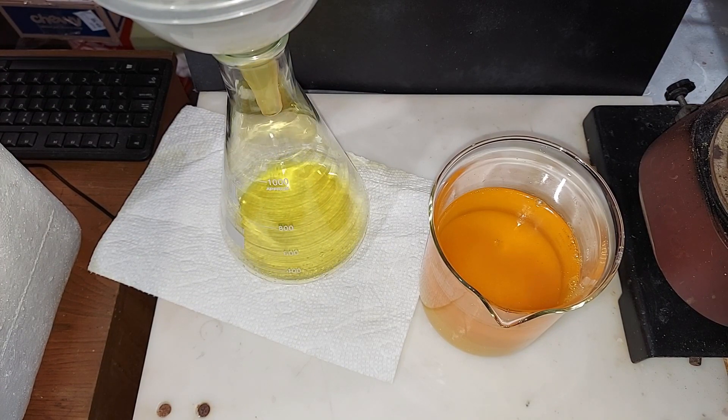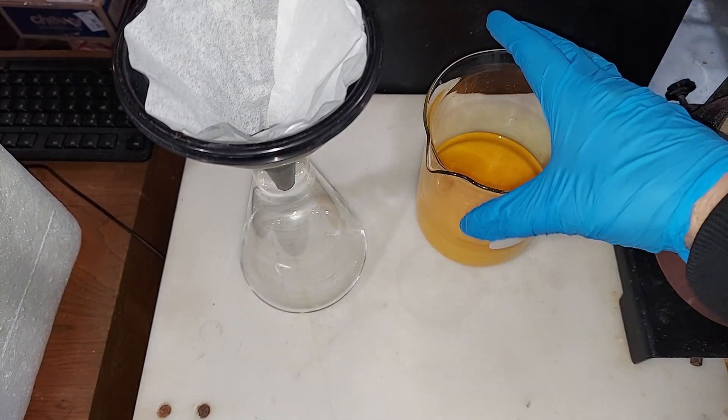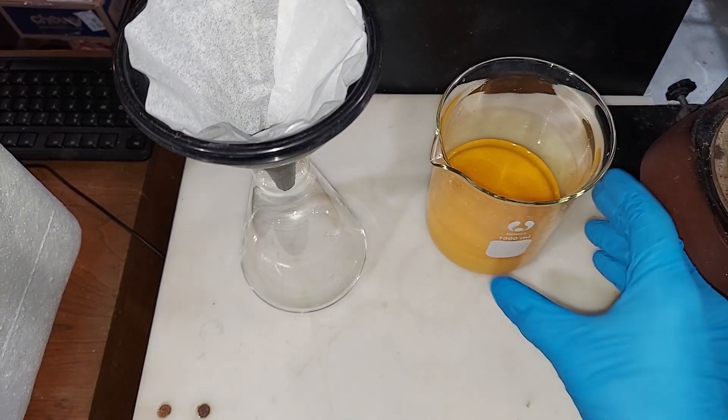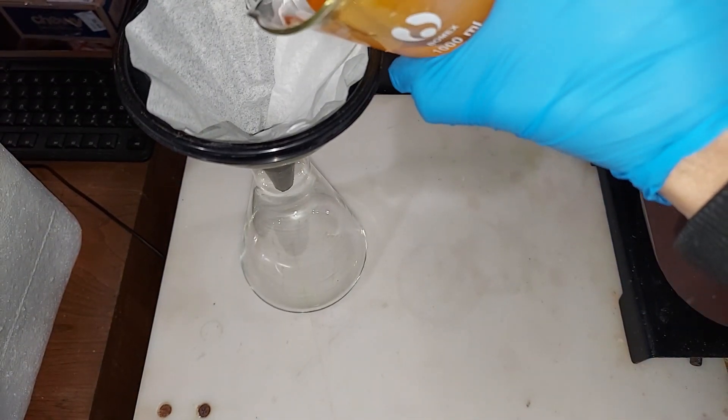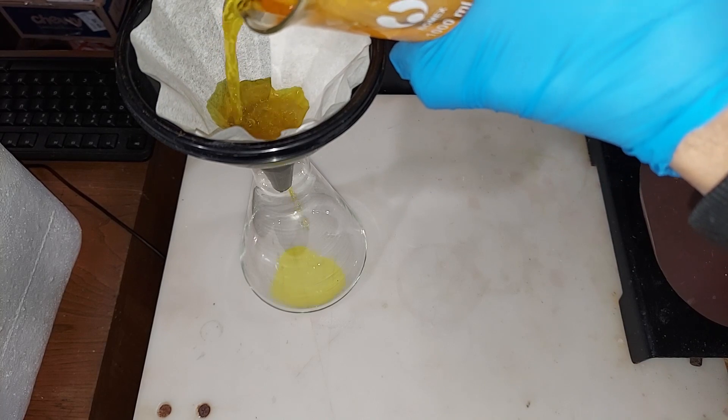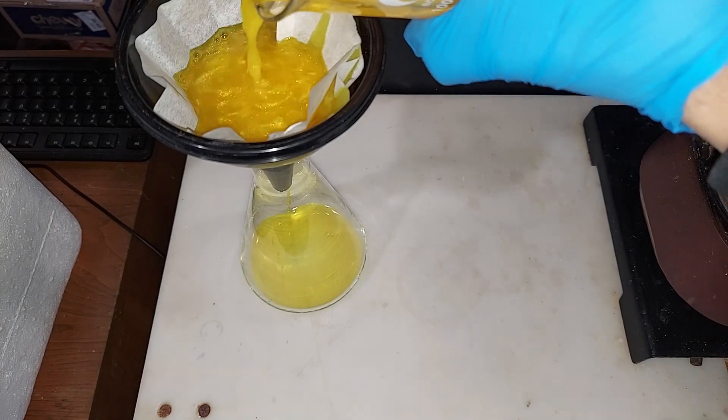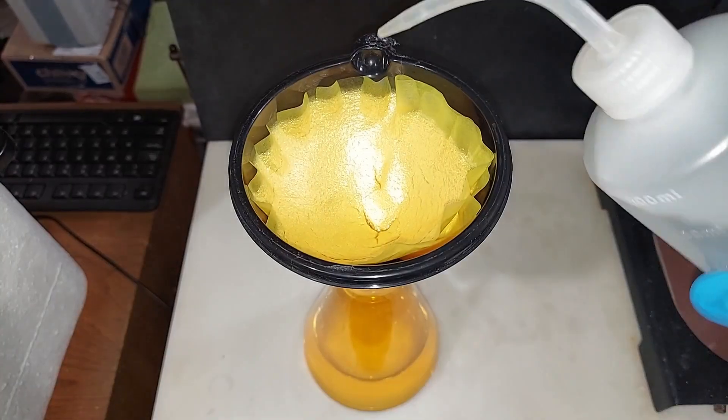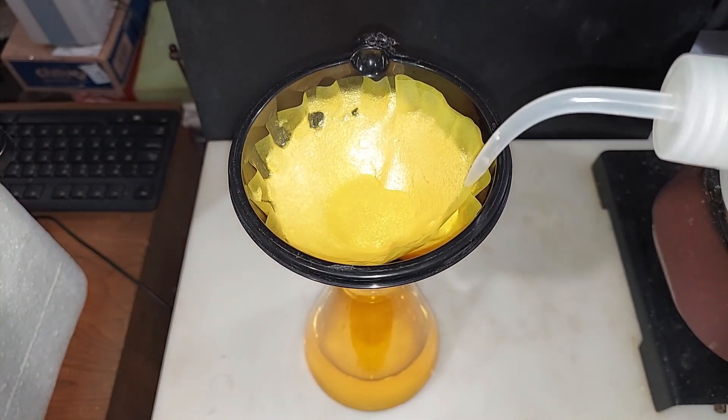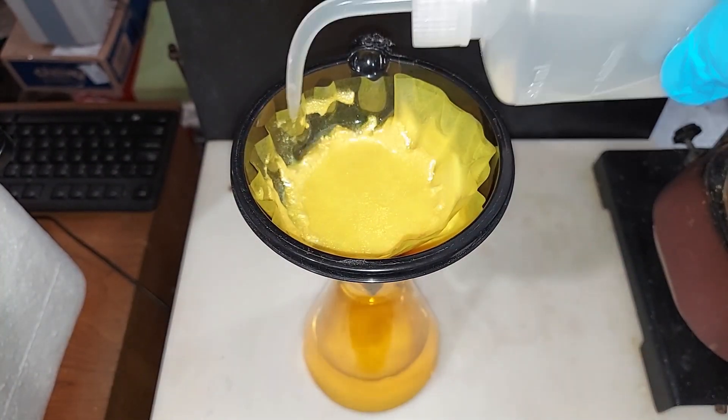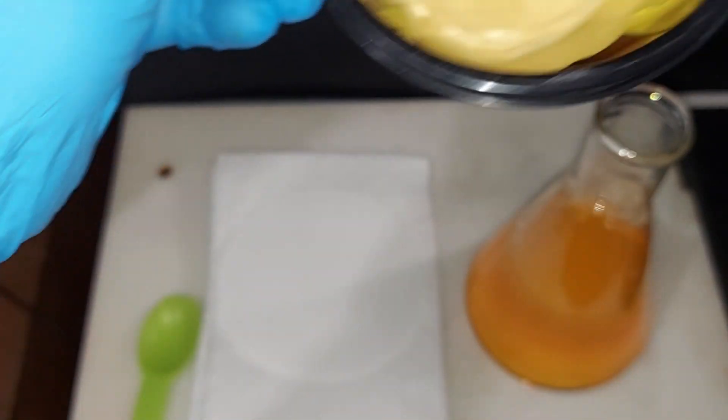You can see how this can stain everything. I was able to transfer almost 400 milliliters out of here so that'll significantly reduce the time that this filters. I'm going to start filtering this. It's going to take some time as it always does. I'm just going to rinse these crystals with some distilled water here. These picric acid crystals have been washed twice.